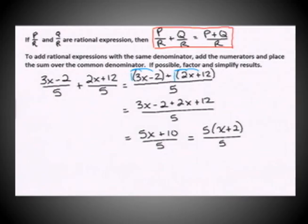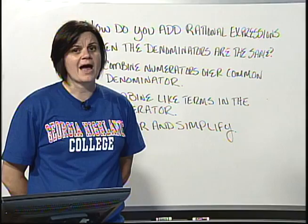Alright, so we do have a common factor of 5 in the numerator and denominator. So 5 divided by 5 is just 1, or multiplying x plus 2 by 1, which wouldn't change that result. We're left with x plus 2 as the final result of this addition of rational expressions.